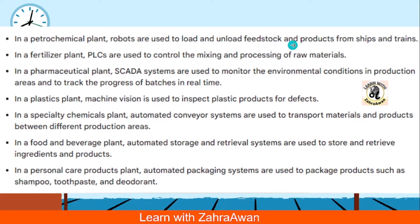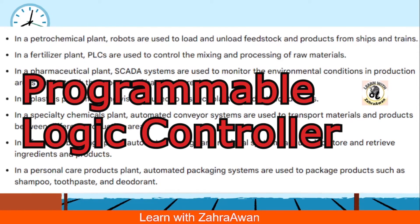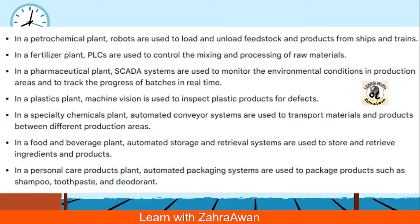Automation is also used to load and unload feedstock and products from ships and trains. In petrochemical plants, robotics and automation are used to load and unload ships and trains. In fertilizer plants, automation is used to control and mix processes and raw materials using PLCs (Programmable Logic Controllers) to control and mix processes and track the progress of batches in real-time.